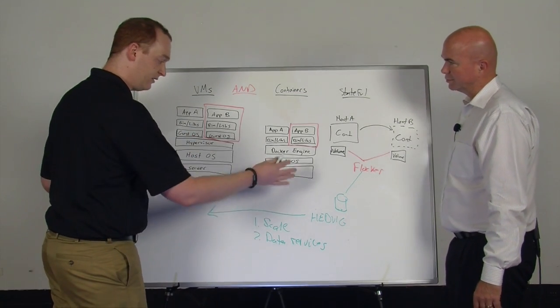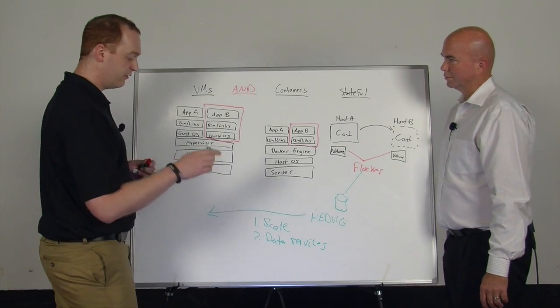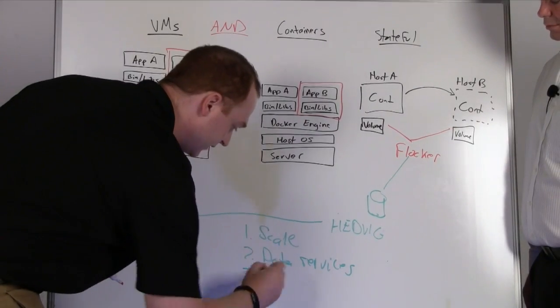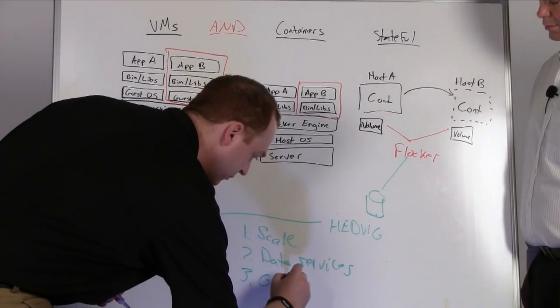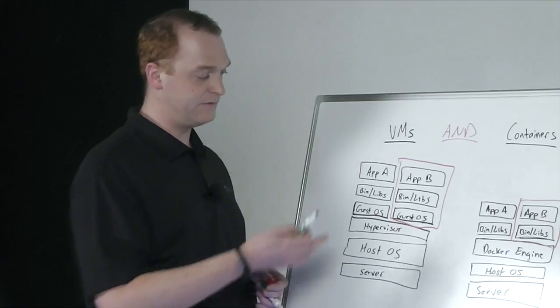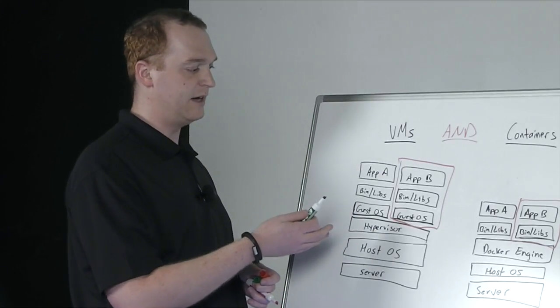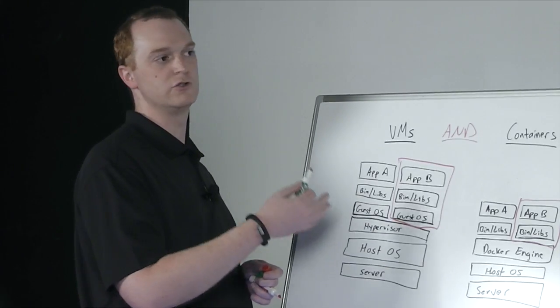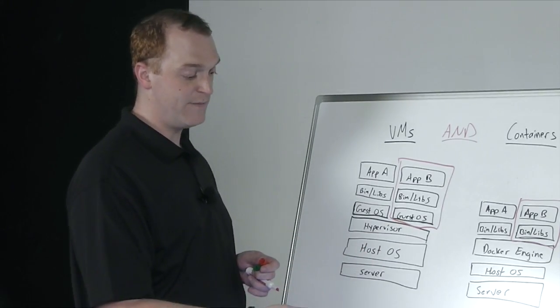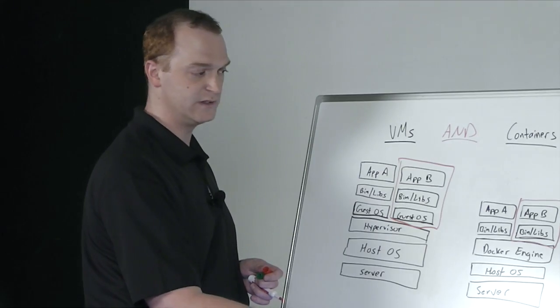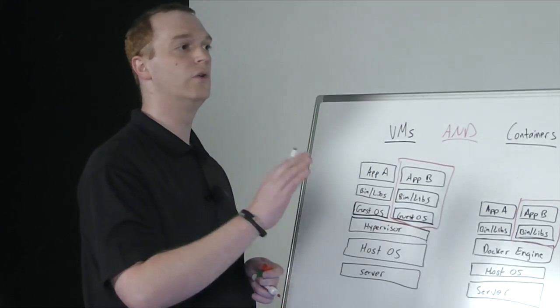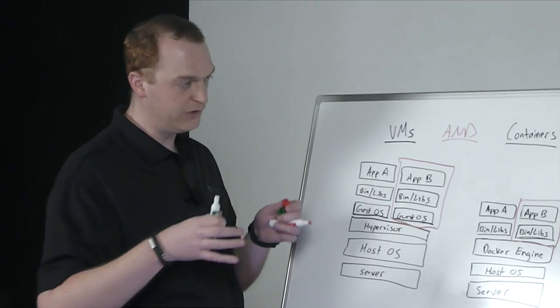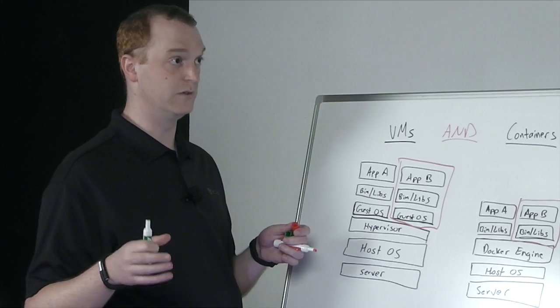So now you've got scale, you've got data services. The third and most important one, we think, is to have very granular policies. And the reason why that matters is in a VM world, a VDI is going to be completely different than some sort of exchange server or something like that. And so I might need to apply different data services. Well, containers take that to a whole other degree, because now I'm decomposing an application into a ton of different microservices.